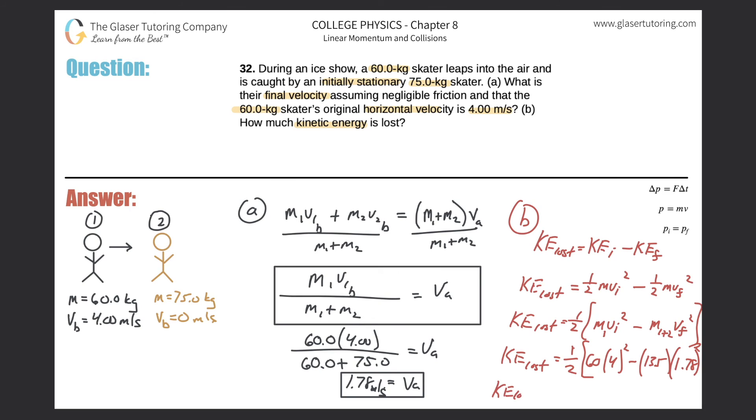So the kinetic energy lost will simply be, so we'll do what's in the parenthesis first. So 60 times 4 squared minus 135 times 1.78 squared. Okay, and then multiply that all by 0.5. So here we have a value that the kinetic energy lost will be 266 joules. All right, and that takes care of letter B.